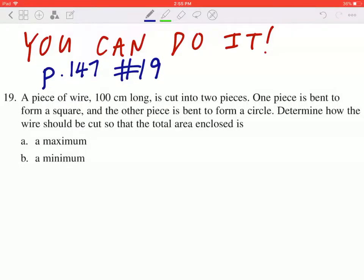Hi everyone. Let's take a look at number 19 on page 147. A piece of wire, 100 centimeters long, is cut into two pieces. One piece is bent to form a square and the other piece is bent to form a circle. Determine how the wire should be cut so that the total area enclosed is a maximum, and in part B, a minimum.